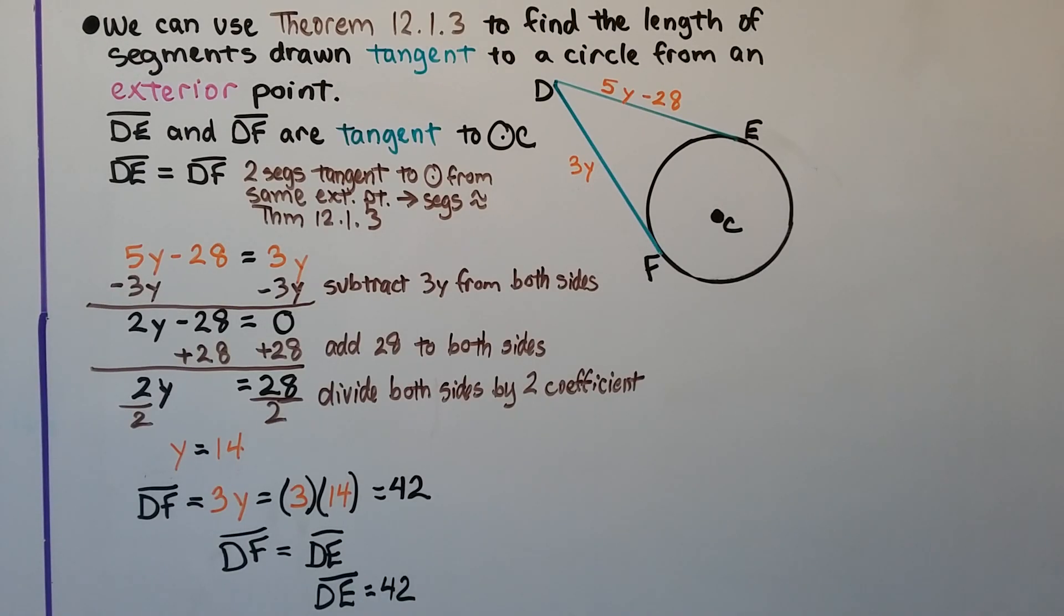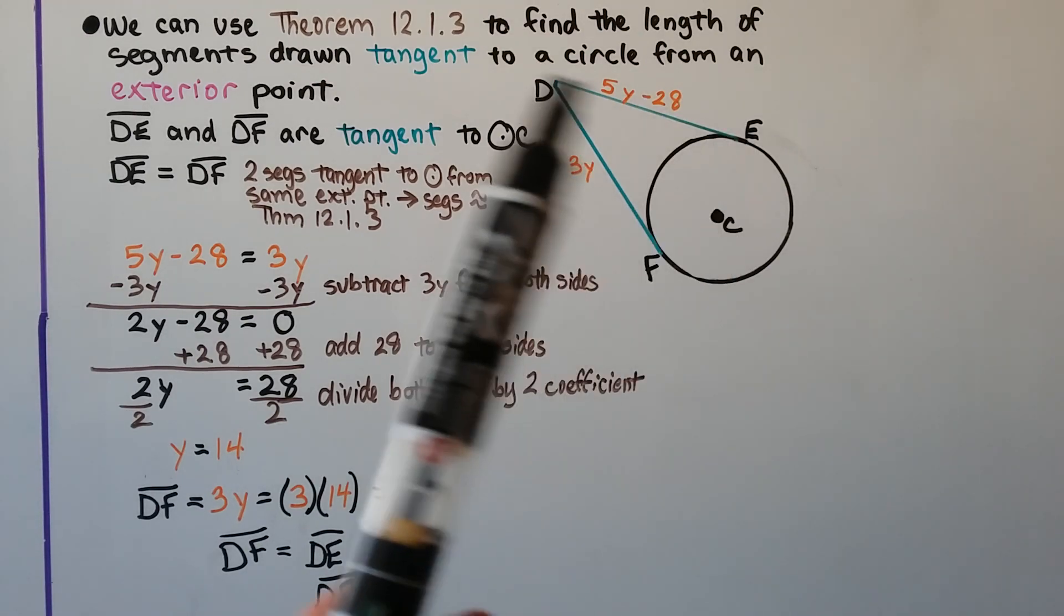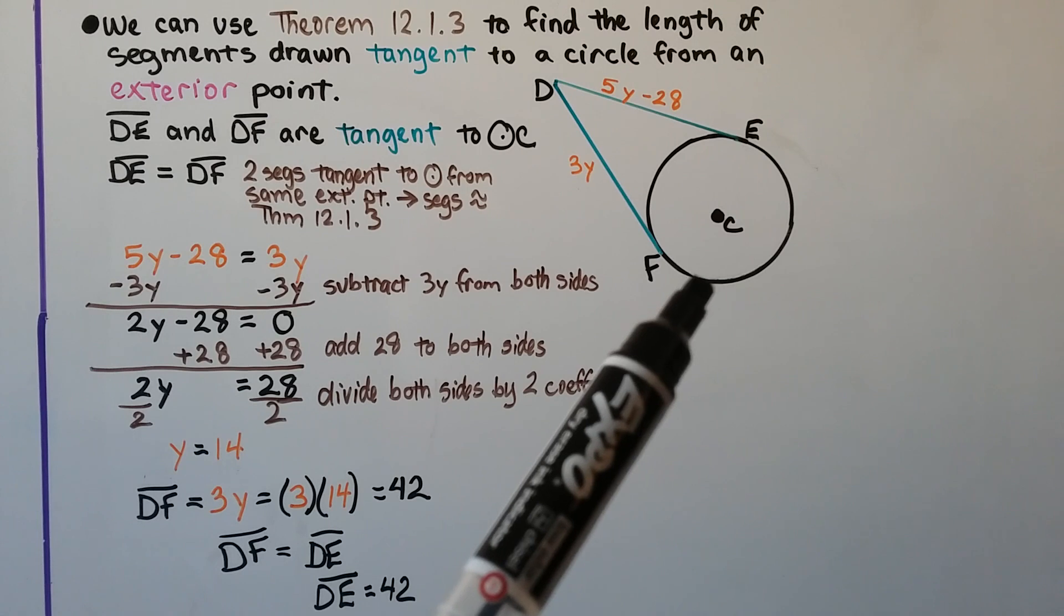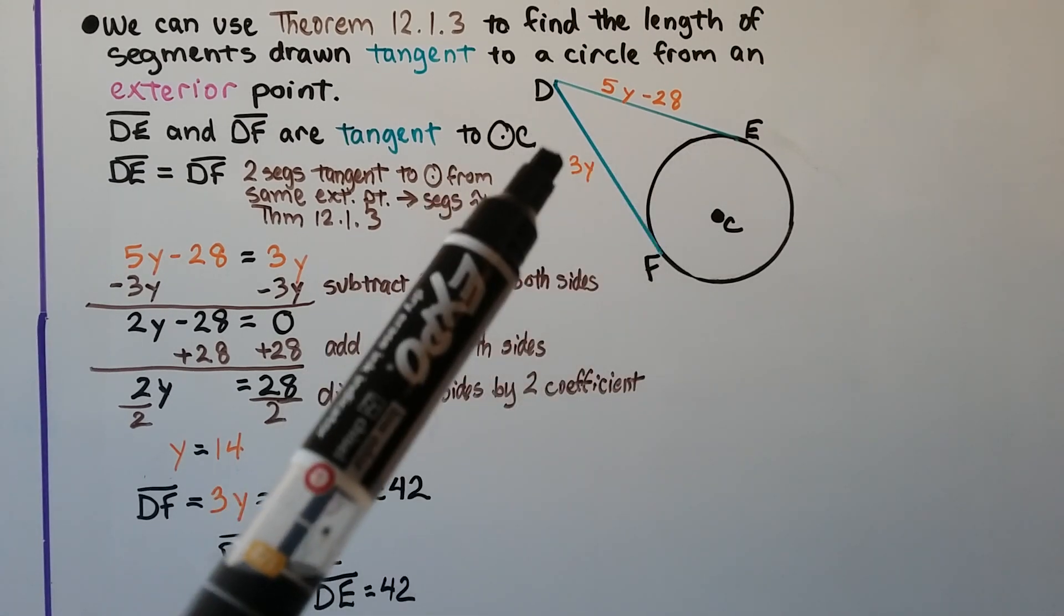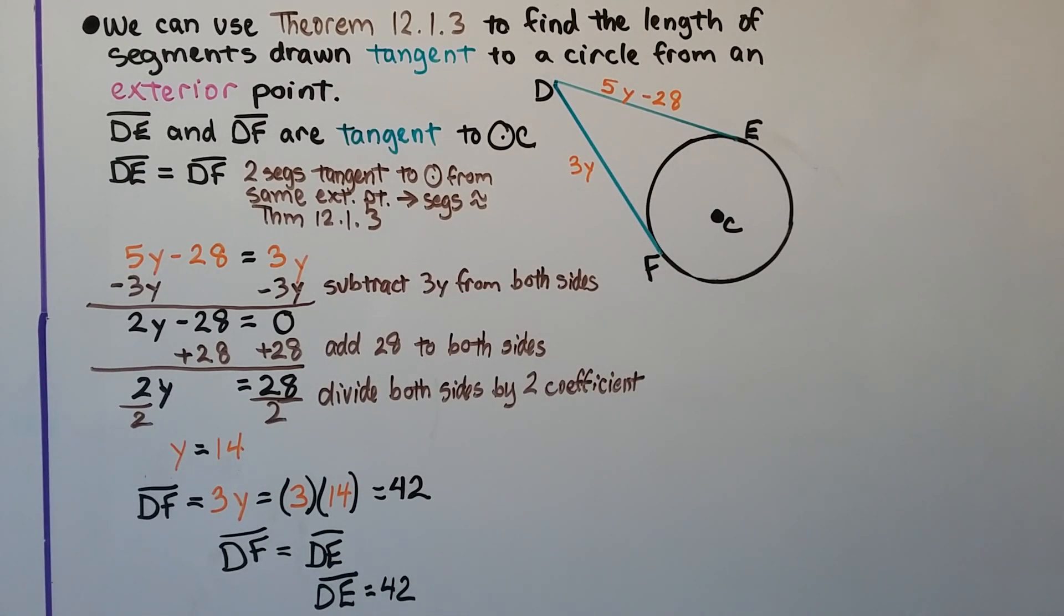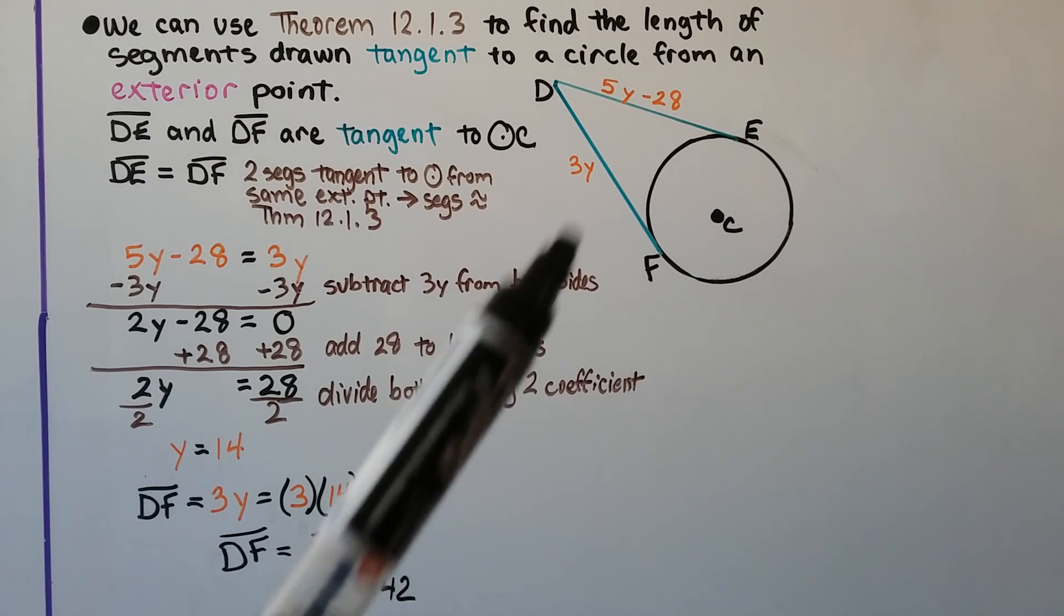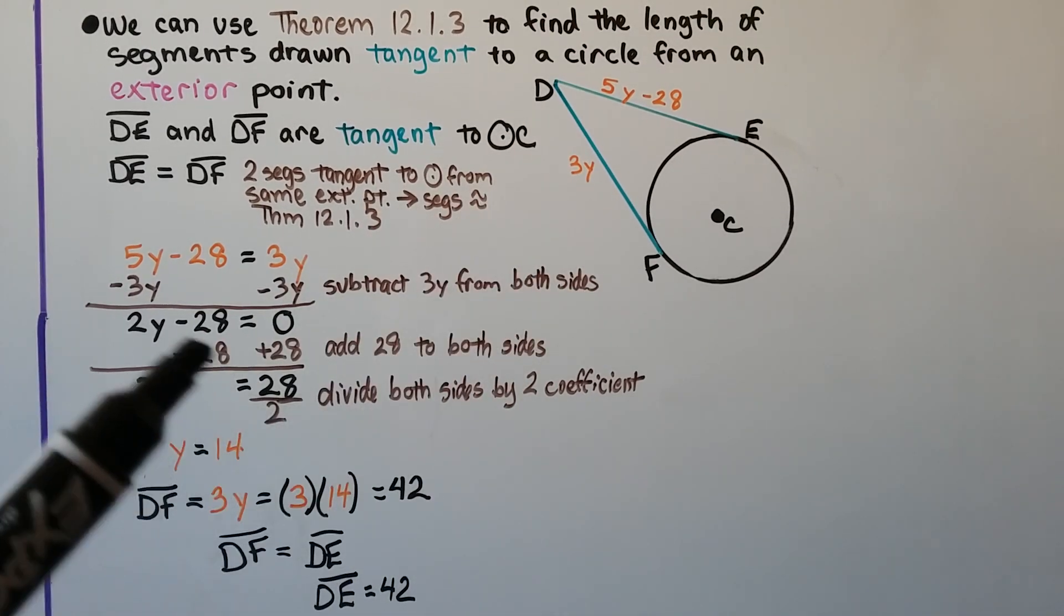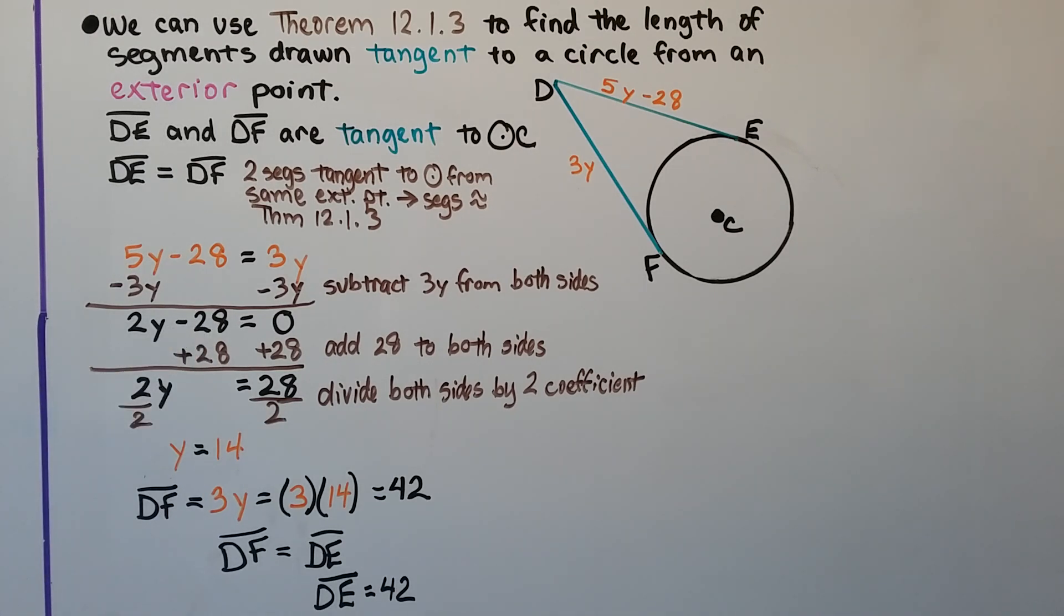We can use theorem 12.1.3 to find the length of segments drawn tangent to a circle from an exterior point. We have segment DE and DF. They're tangent to circle C. And DE is equal to DF. Two segments tangent to circle from the same external point, therefore segments congruent. So if this is equal to this, we can write an equation setting 5y minus 28 equal to 3y, and we can solve it for y.